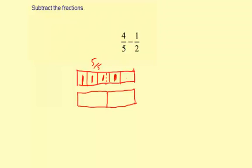So if we have fifths and halves, the common denominator is going to be 5 times 2, which is 10.